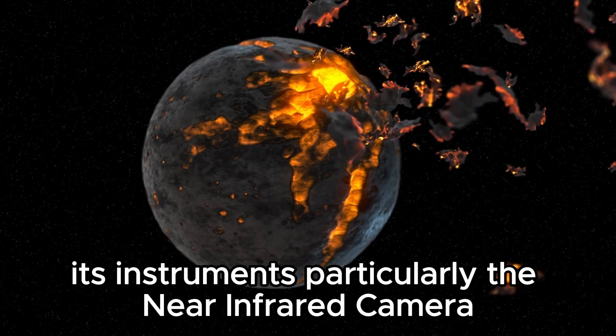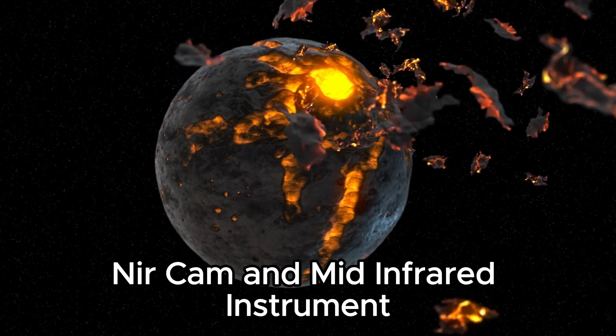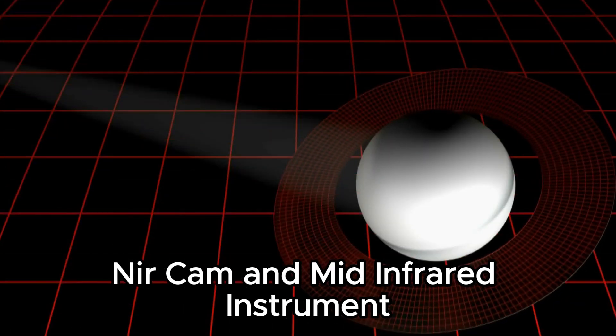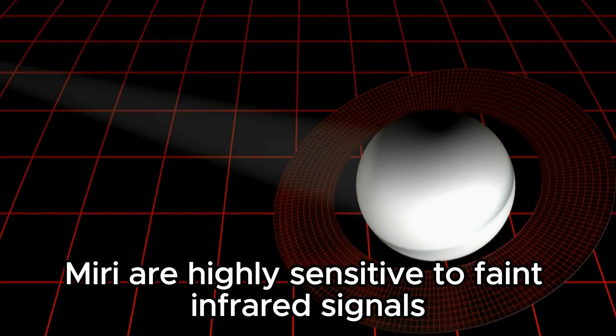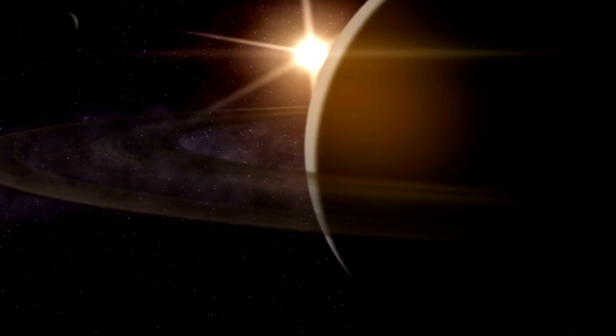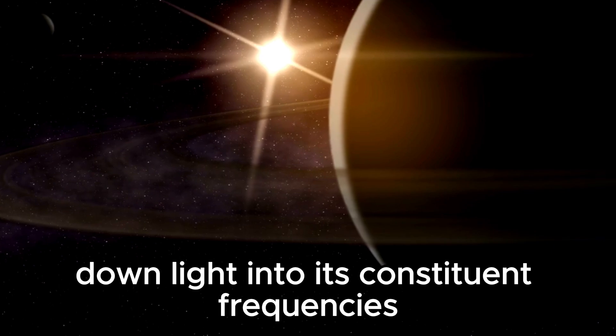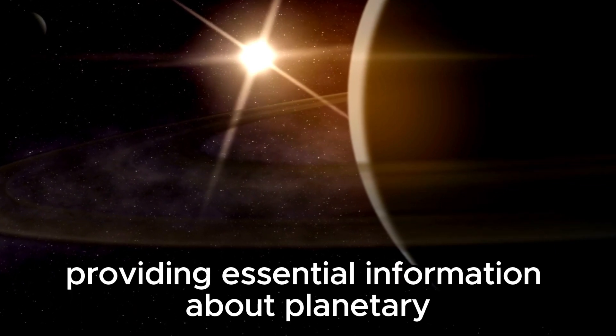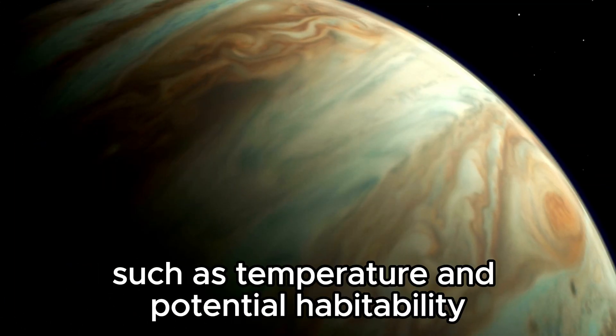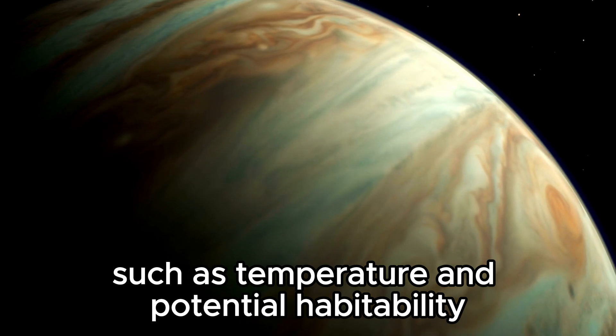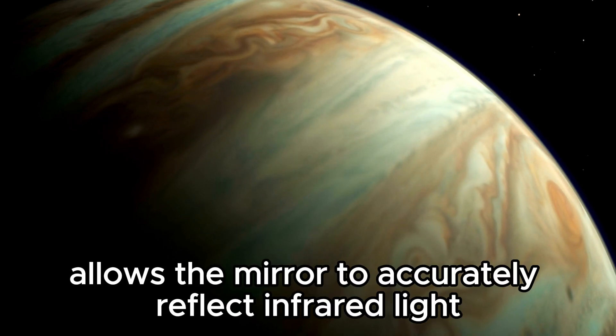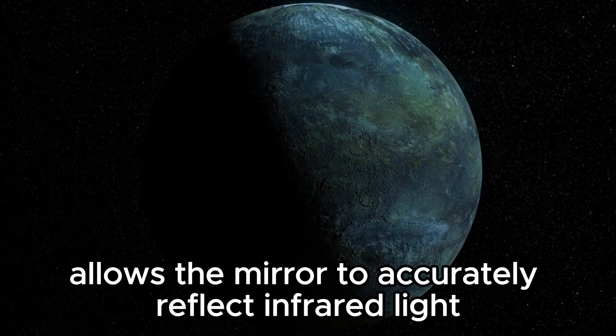Its instruments, particularly the near-infrared camera (NIRCam) and mid-infrared instrument (MIRI), are highly sensitive to faint infrared signals. Spectroscopic analysis involves breaking down light into its constituent frequencies, providing essential information about planetary atmospheres, such as temperature and potential habitability. The gold coating allows the mirror to accurately reflect infrared light, crucial for observing faint and distant objects within the universe.